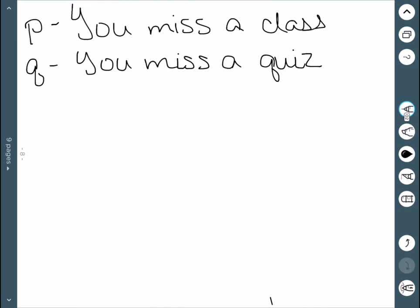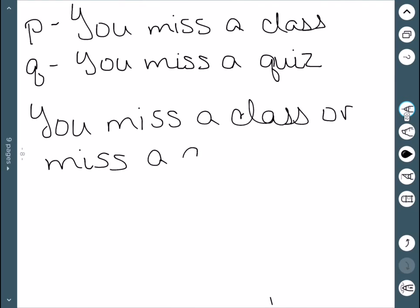Example, we'll let P be you missed a class and Q you miss a quiz. So the disjunction: you miss a class or miss a quiz. It could be possible that you missed a class without missing a quiz. It could be possible that you missed a quiz without missing a class. Maybe the quiz is online. It could also be possible that you did both. You could miss a class where a quiz was given.